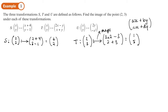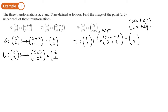For transformation U applied to (2, 3): the top component is 2 times the y-coordinate, which is 2×3 = 6. The bottom component is negative x squared, which is −(2²) = −4. So U maps (2, 3) to (6, −4). Now, U is not a linear transformation because it contains x², which means it has a power — it's not of the required linear form.